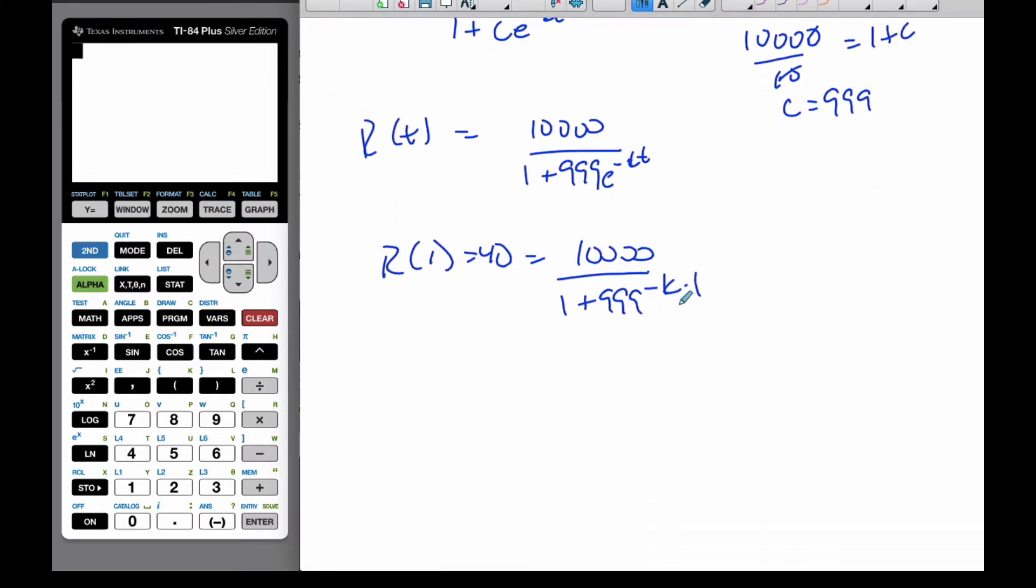And if I'm going to solve for K, I know I can make this 1 plus 999 E to the minus K, is equal to 10,000 divided by 40. I'll do it with some simple arithmetic here, those cancel. And 1,000 divided by 4, I know that is going to be 250.